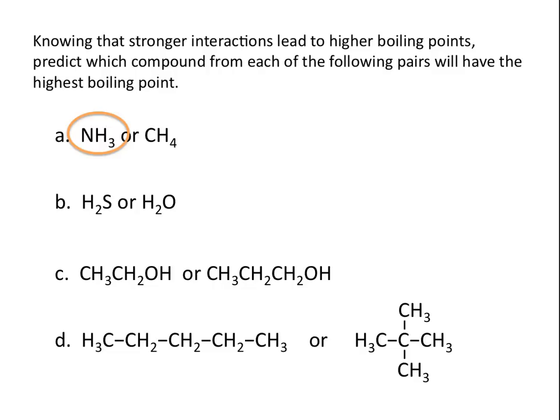B, H2S or H2O. Both of these molecules are polar, so you will see dipole-dipole interactions between molecules of each compound. But H2S just has typical dipole-dipole interactions, while H2O has hydrogen bonding interactions. So between these two, H2O will have the higher boiling point.